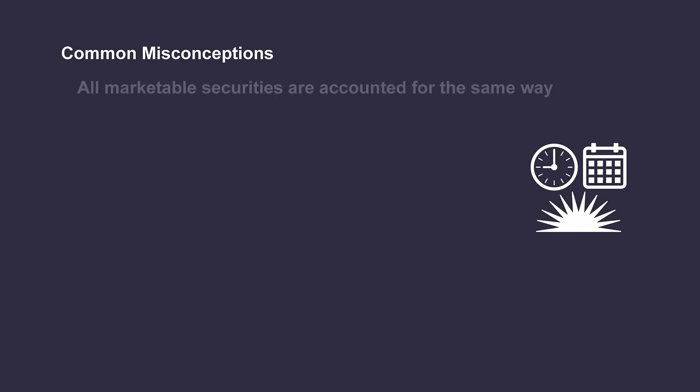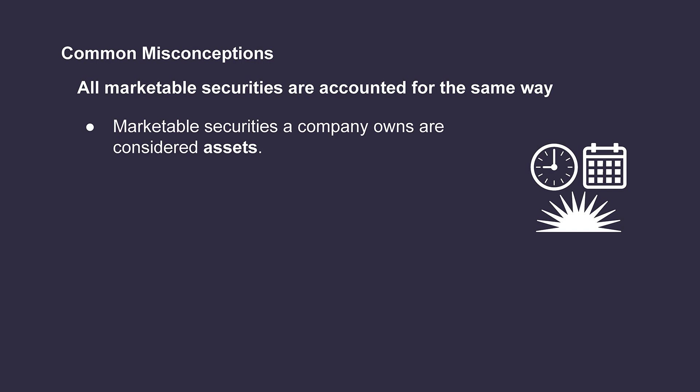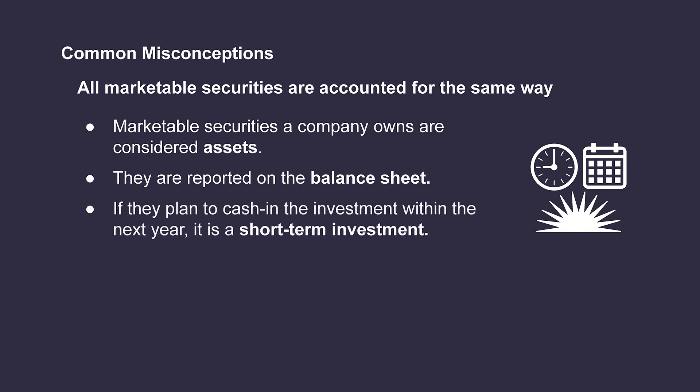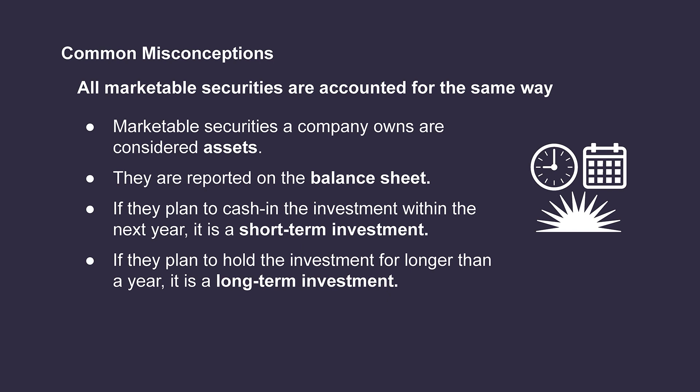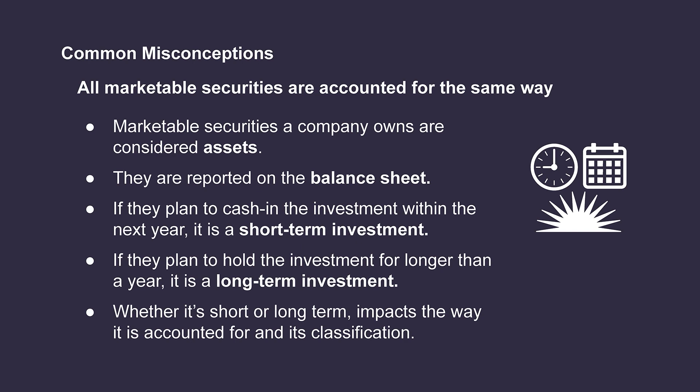It's a common misconception that all marketable securities are accounted for in the same way. All marketable securities that a company owns are considered to be assets reported on the balance sheet. However, the specific category of asset can differ depending on what the company plans to do with the investment. If the company plans to cash in the investment within the next year, it will generally be referred to as a short-term investment. However, if the company plans to hold this investment for a longer period of time — generally more than a year — it would be referred to as a long-term investment. Whether it's considered short term or long term will ultimately impact the way it's accounted for and its classification on the balance sheet.